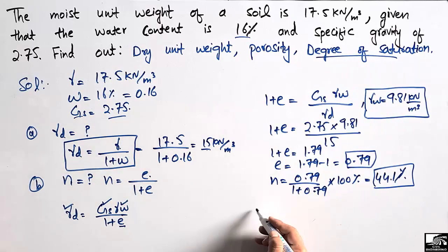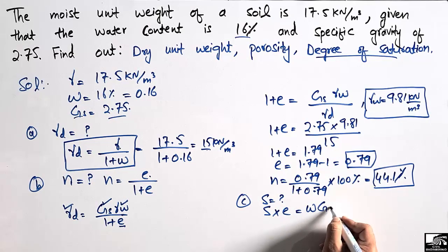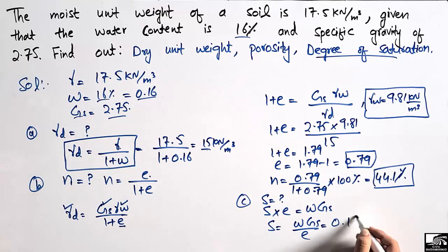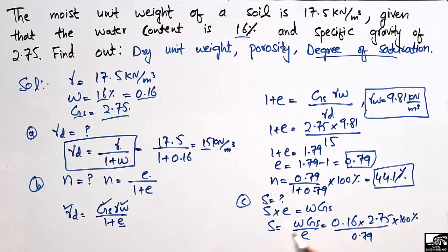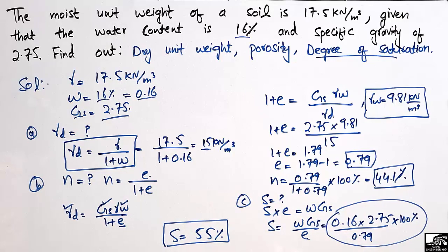Now to find the degree of saturation, S, for this soil sample, we use the equation: S times E equals water content times Gs. So S can be found by: S equals (w times Gs) divided by E. Plugging in values: water content is 0.16, Gs is 2.75, and E is 0.79. Multiplying by 100% since degree of saturation is expressed as a percentage, we get S equal to 55%.